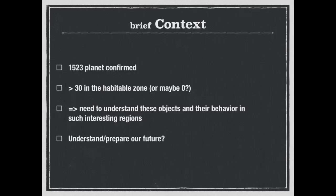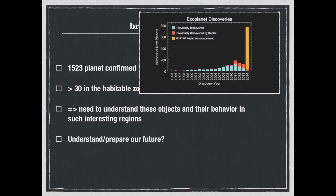So nowadays we know more than one thousand and a half planets that have been confirmed and as you can see in these figures that shows the number of discovery of exoplanets as a function of the year. 2014 was quite good, especially thanks to the Kepler mission.